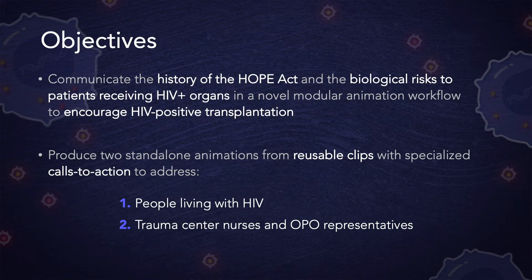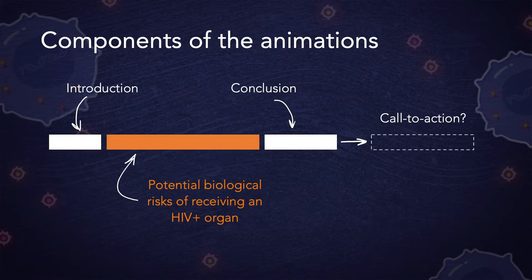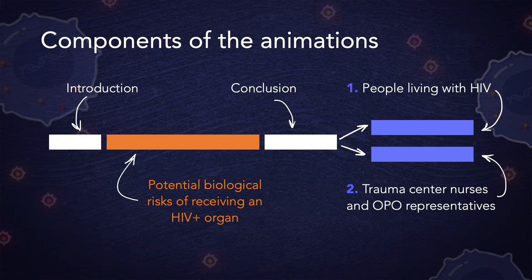The first goal of this project was to explain the HOPE Act and the biological risks of HIV-positive transplantation in a novel modular animation workflow. The second was to produce two standalone animations created from reusable and unique call-to-action clips that address the two critical audiences. Each animation consisted of reusable introduction, body, and conclusion clips, with a unique call-to-action clip tacked on at the end that addresses each audience on what they can do to help.